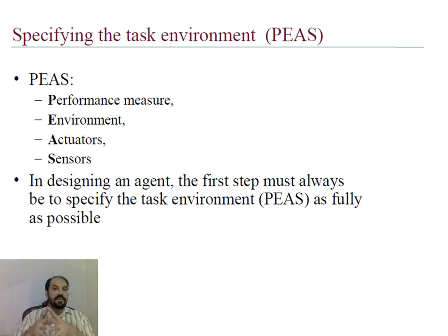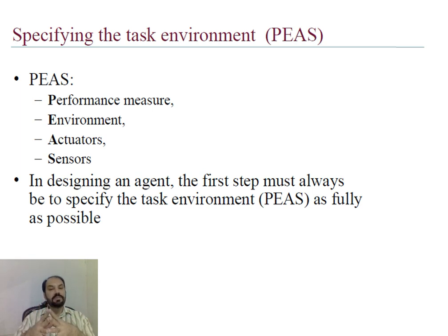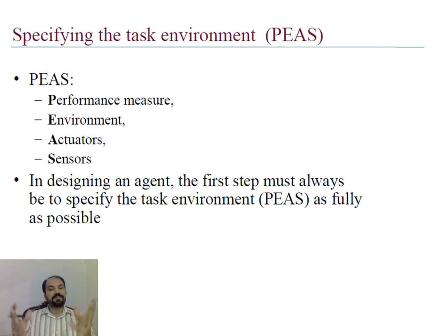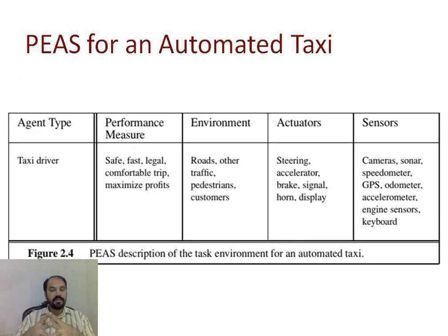This specification is called PEAS: P for performance measure, E for environment, A for actuators, and S for sensors. For any agent, the first task is the specification of PEAS.